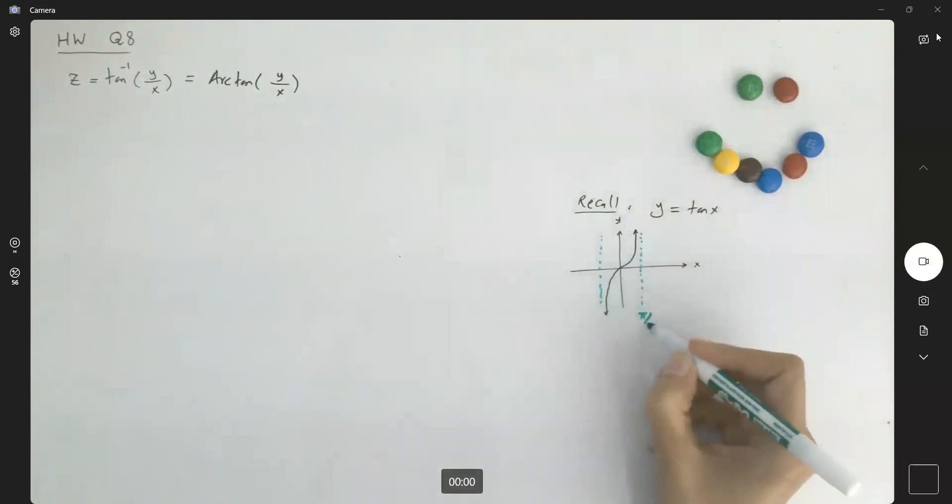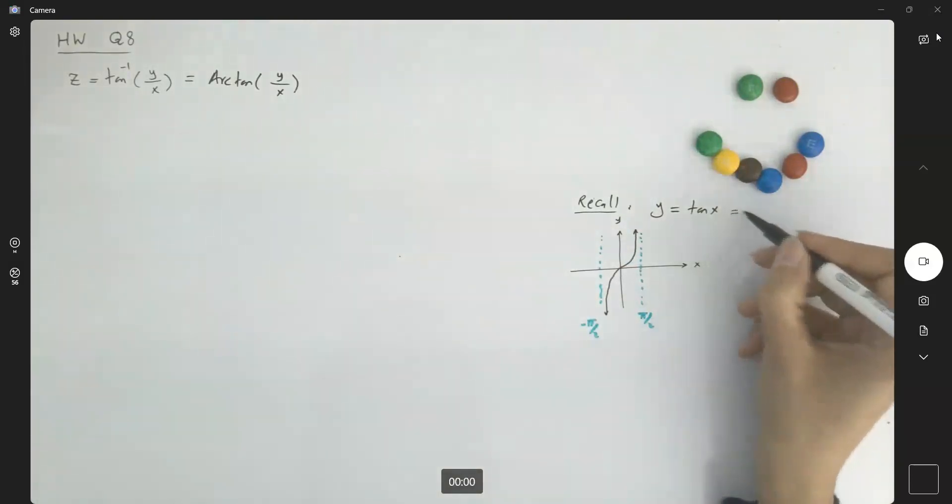It has vertical asymptotes at pi over 2 and negative pi over 2. Remember, the graph continues on all sides. Why is that? Because you have sine x divided by cosine x and cosine x cannot be zero.